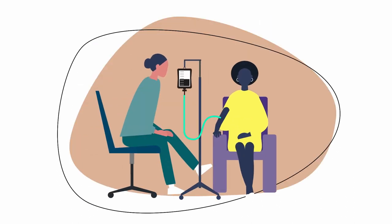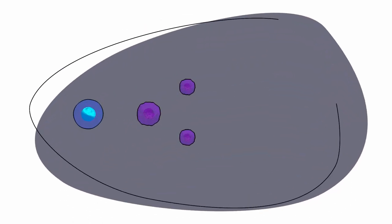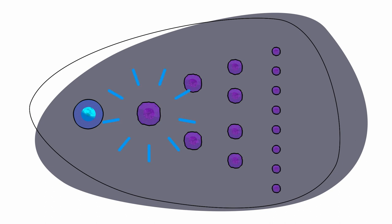Chemotherapy is the main treatment for most types of AML. Chemotherapy is a drug treatment that uses powerful chemicals to kill the fast-growing cancer cells in your body.